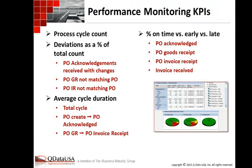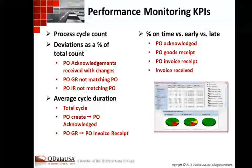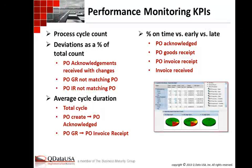This was a large movie producer, for reference. From a monitoring and KPI perspective: process cycle counts — how many POs are going through, and what percentage of deviations versus that total count. How many acknowledgements out of the total POs came in with changes? How many goods receipts were not matching the PO? What's the percentage of invoice receipts not matching the PO? What's the average cycle duration? What's the percentage of on-time versus early versus late, based on each event — goods receipt, invoice receipt? These are all pretty standard to extract out of an EM implementation.